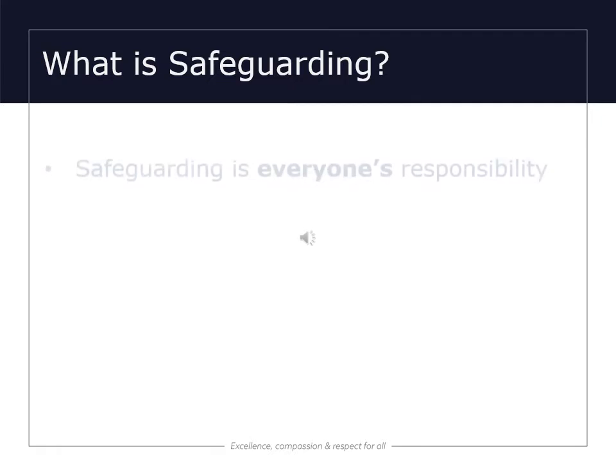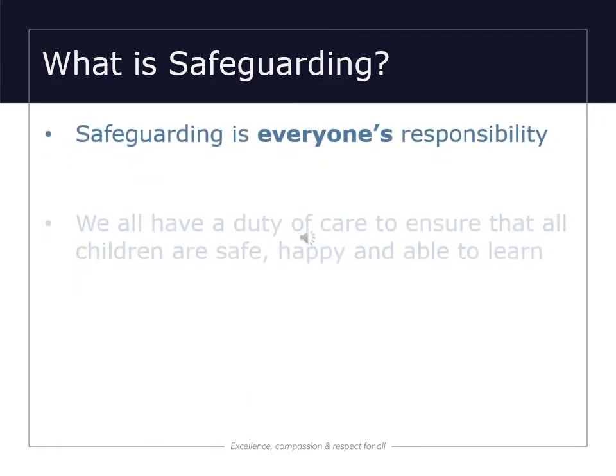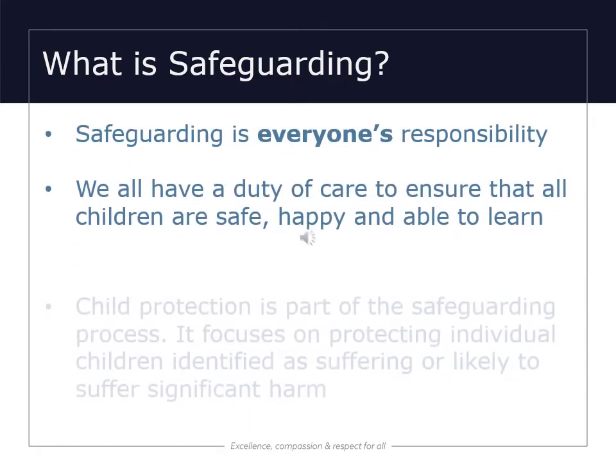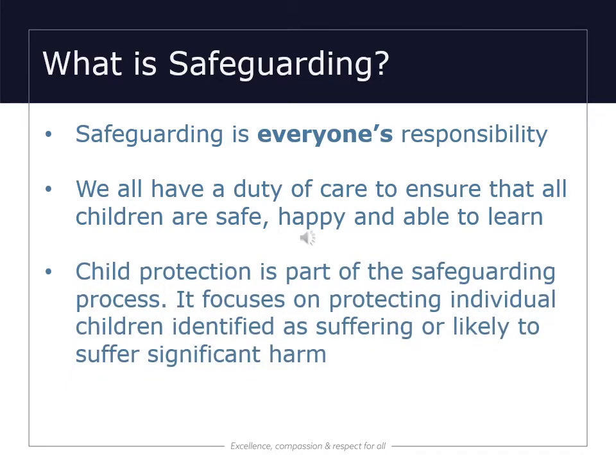Safeguarding is everyone's responsibility. We all have a duty of care to ensure that all children are safe, happy and able to learn. Child protection is part of the safeguarding process — it focuses on protecting individual children identified as suffering or those who are likely to suffer from significant harm.